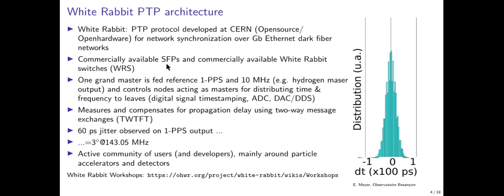We will show later why you should avoid anything other than White Rabbit switches for this application. The PTP time synchronization architecture has one grandmaster given a reference 1 PPS and 10 MHz — in our case from a hydrogen maser. Various nodes receive the synchronization signal from the grandmaster and act as masters to synchronize leaves, which may be digital timestamping, analog-to-digital converters, digital-to-analog converters, or direct digital synthesizers. With two-way time-frequency transfer compensation, all nodes are expected to be time-synchronous.